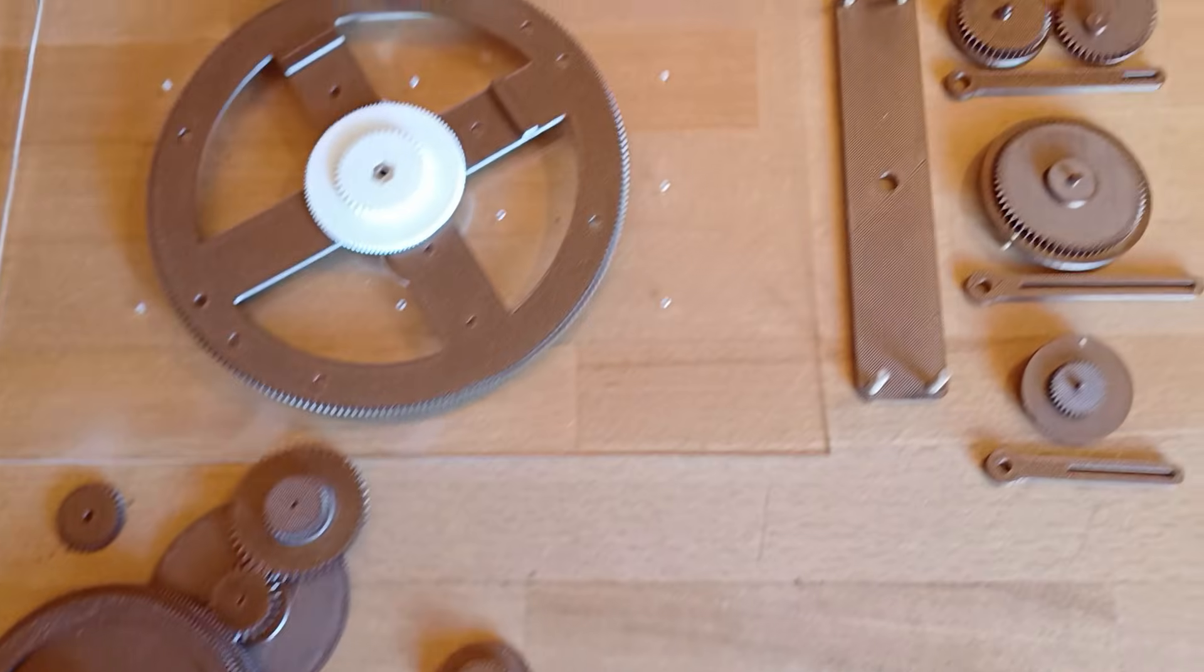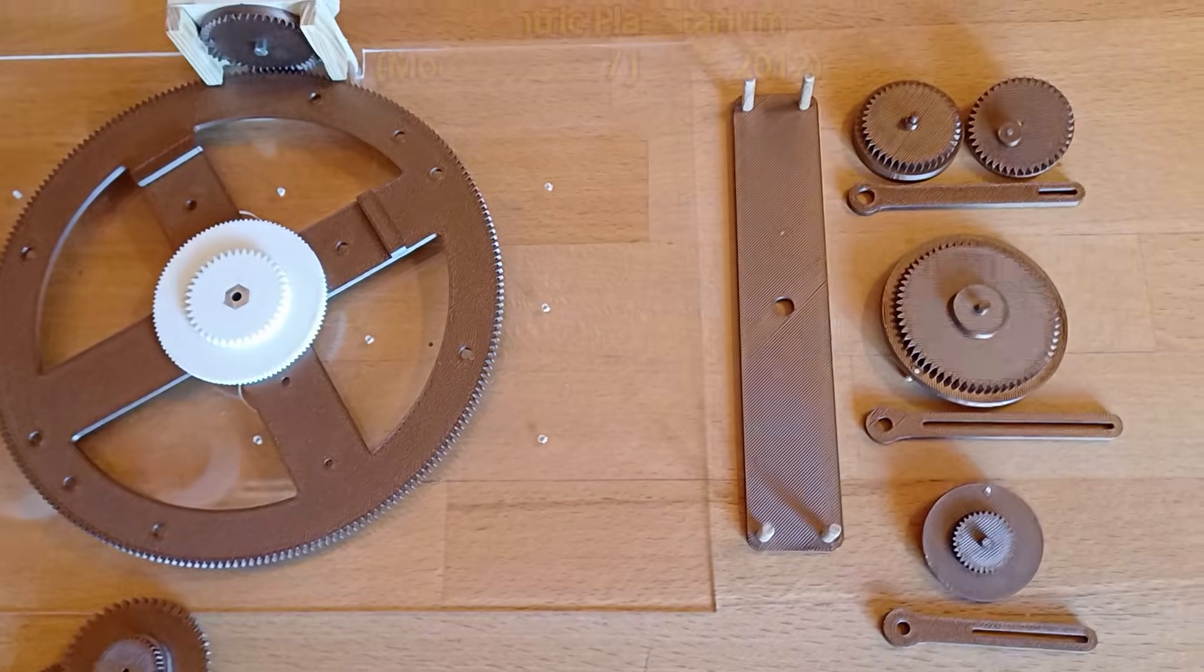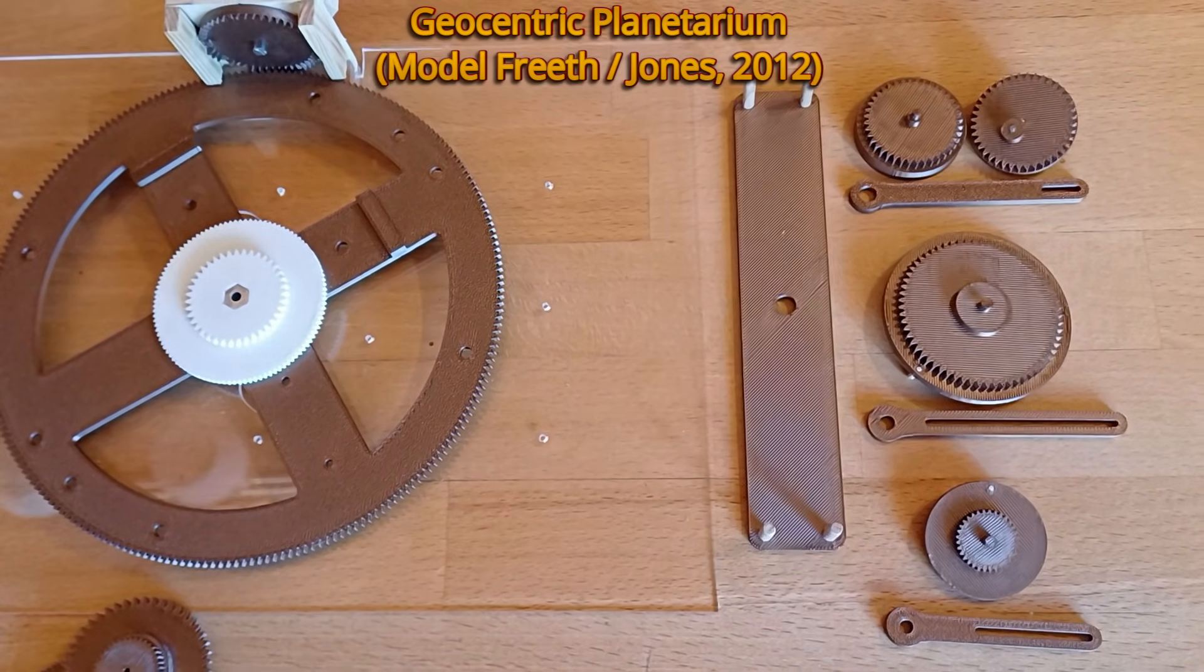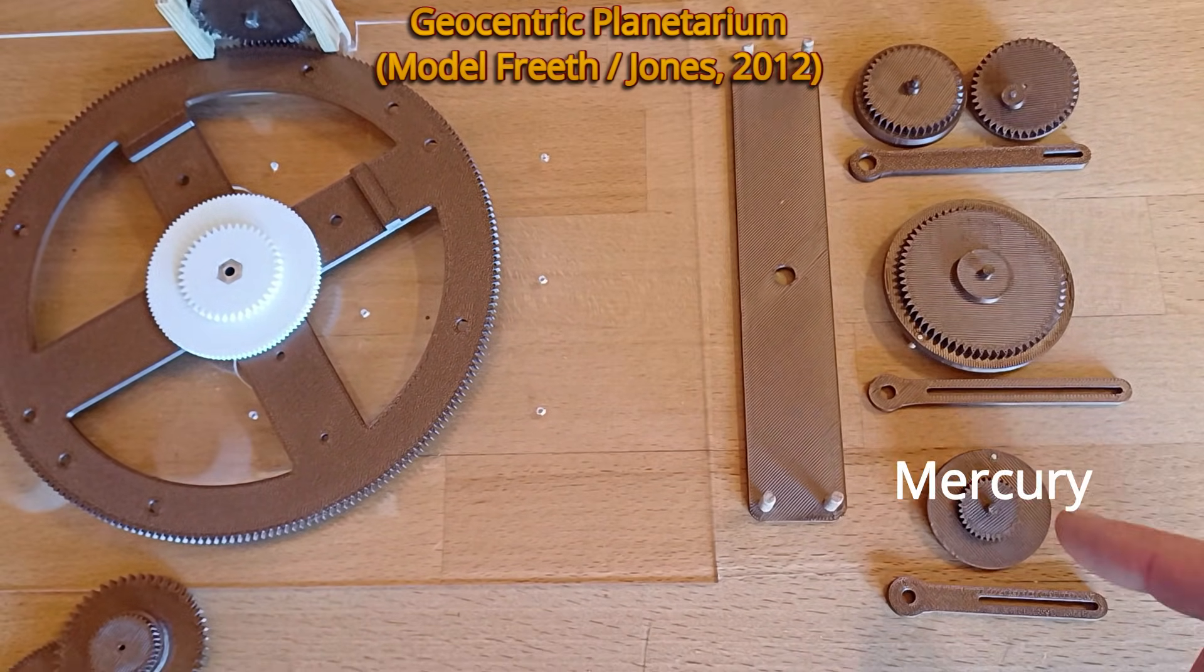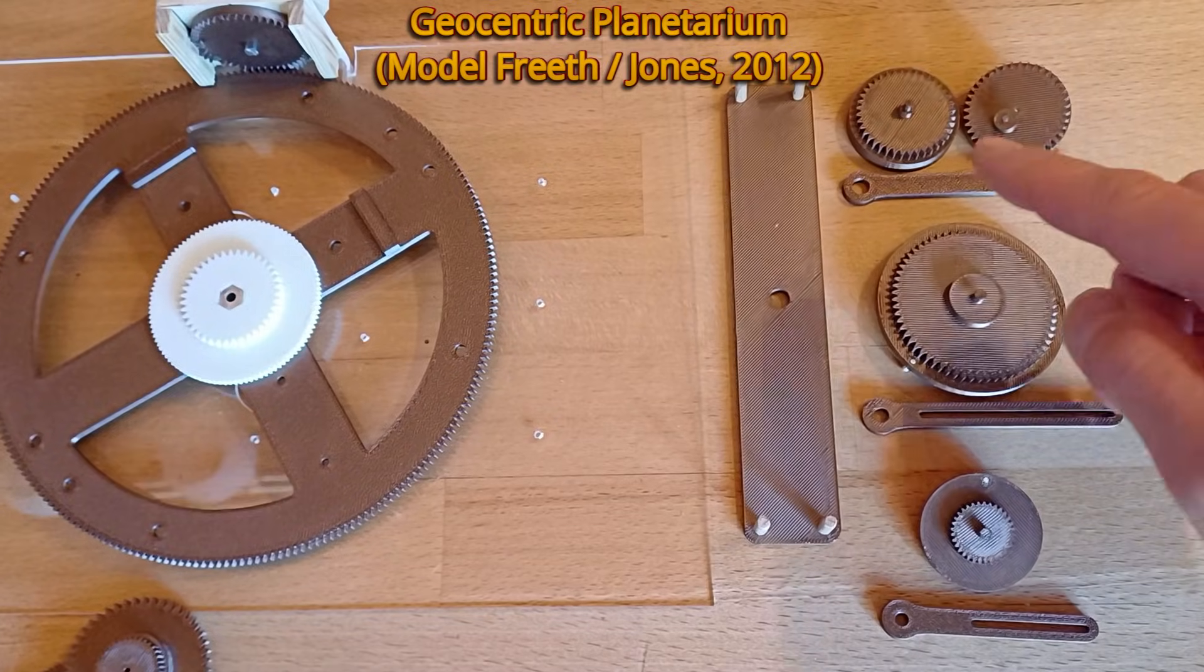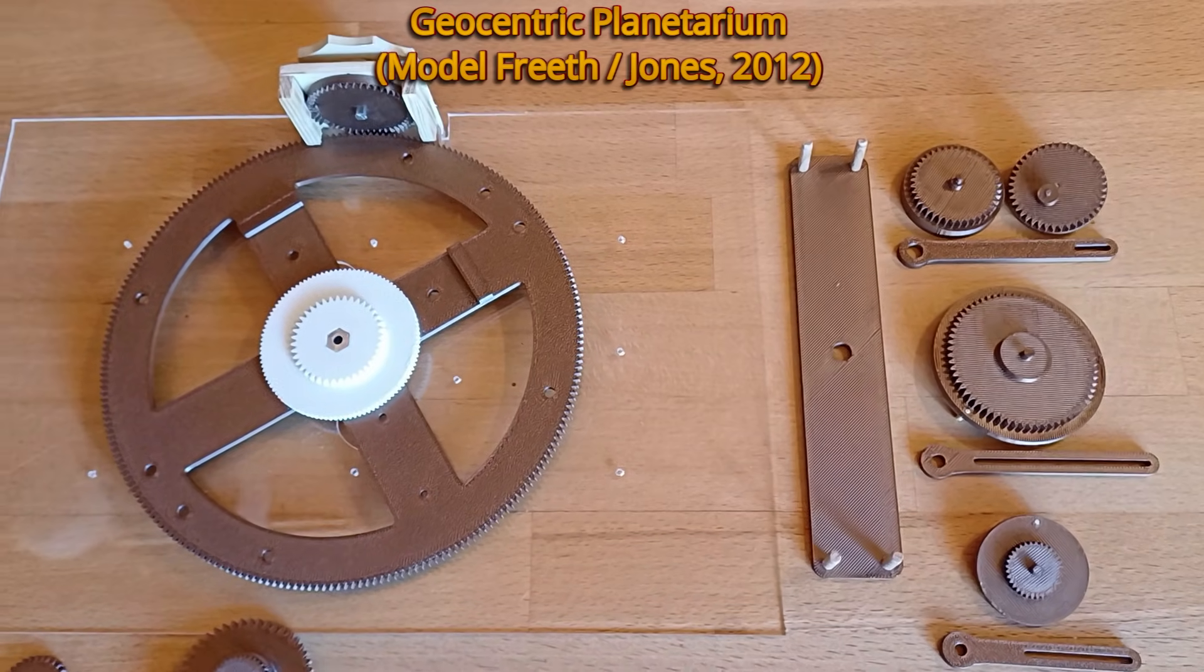And the fourth assembly are the wheels and follower arms of the geocentric planetarium. So far I only have Mercury, Venus and the true sun. These gears are mounted on the main wheel B1.